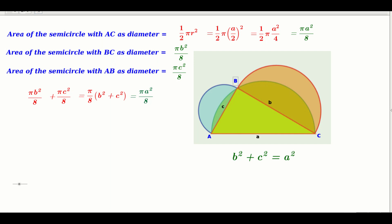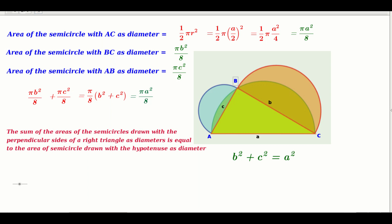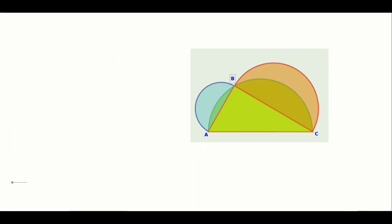We have the area of the semicircle with the hypotenuse as diameter equal to πA²/8, and the sum of the areas of the semicircles drawn with the perpendicular sides as diameters is also πA²/8. So we have proved that the sum of the areas of the semicircles drawn with the perpendicular sides of a right-angled triangle as diameters is equal to the area of the semicircle drawn with the hypotenuse as diameter. Now let's go back to our problem.